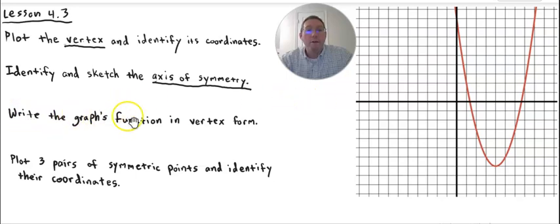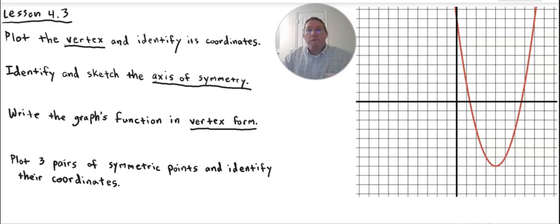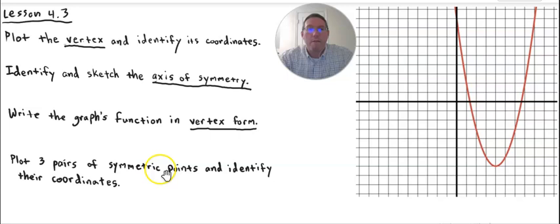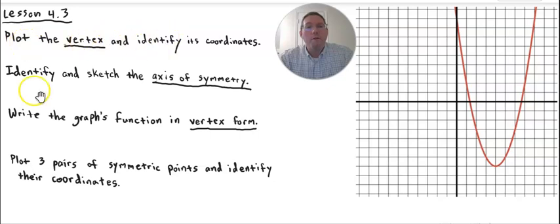We're also going to write the graph's function in what's called vertex form. In my opinion, vertex form is probably the easiest of all the forms of a quadratic graph. And because it's a symmetric graph, we're going to plot three pairs of symmetric points — three pairs means six points altogether — and identify the coordinates of all six points. But before we start, let me give you a simple understanding of how to write vertex form.